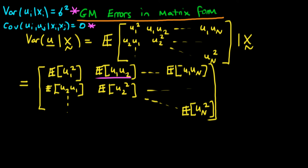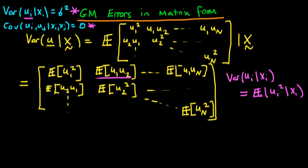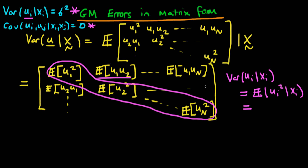So this is our variance of our vector u in matrix form. How can we now translate our conditions of homoscedasticity and no autocorrelation into this particular matrix? Our first condition was that the variance of the individual ui given x is equal to a constant sigma squared. Since we know the expectation of an individual error ui is equal to zero, the variance of an individual error ui given xi is exactly the same as the expectation of ui squared given xi. These are each of our diagonal components, and we require each of these diagonal components to be equal to sigma squared.